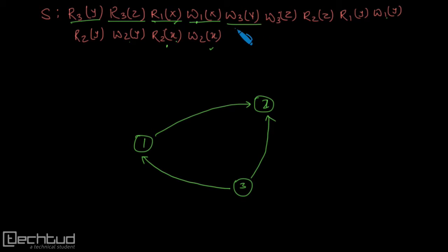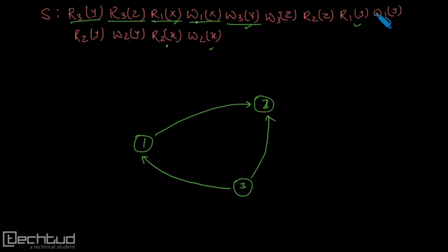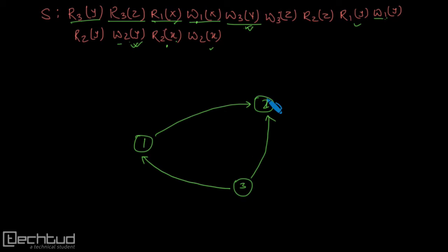Now w3y. On y I have to check. Here I have y — this is write and this is read. So these two are conflicting. I will draw an edge from 3 to 1 — which I already have. There is another conflicting pair, also 3 to 1 — already have. Again for y, from 3 to 2 — which I already have. No other operations.